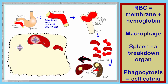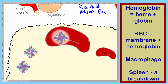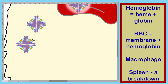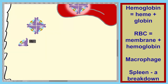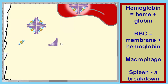The first thing that happens in the macrophage is that we separate the hemoglobin from the rest of the cell fragments — from the membrane portion of the cell and anything else in the cell. Now we're going to break the hemoglobin itself down. We're going to separate the heme from the globin. Since these are all the same, we're just going to work with one of the globin subunits.